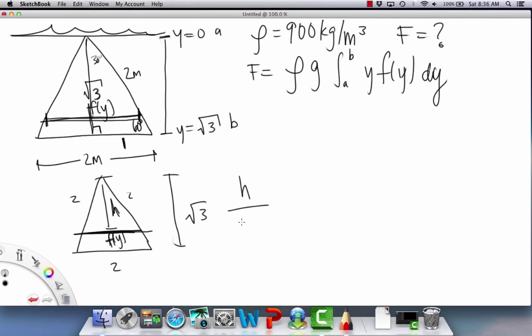What we can say is that h over b, so the height over the base, which in this case is f of y, is equal to h of the big triangle, which is radical three, over the base which is two.